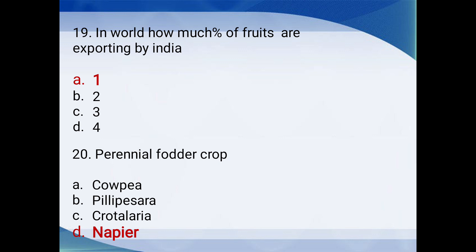In the world, how much percent of fruits are exported by India? 1%, 2%, 3%, or 4%? The answer is 1% — India produces many fruits but exports only 1%. Perennial fodder crop: cowpea, pilipesara, crotalaria, or napier? The answer is napier. Napier grass is a perennial crop, whereas cowpea and pilipesara are annual crops.